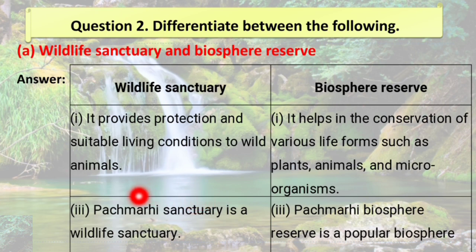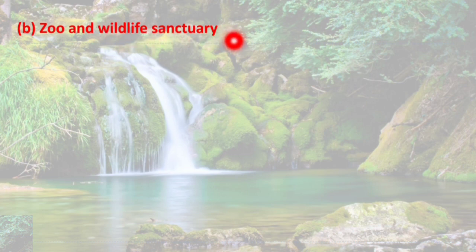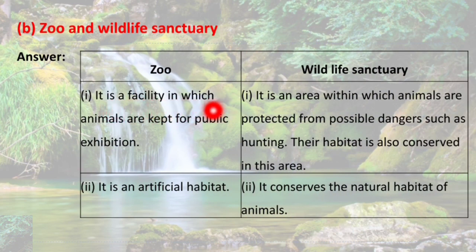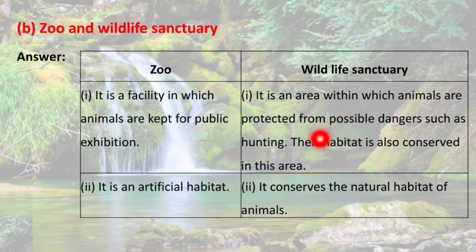Next: zoo and wildlife sanctuary. Zoo is a facility in which animals are kept for public exhibition. Wildlife sanctuary is an area within which animals are protected from possible dangers such as hunting, and their habitat is also reserved. Zoo is a facility for exhibitions, but wildlife sanctuary provides a natural habitat where animals are protected from hunting and poaching.